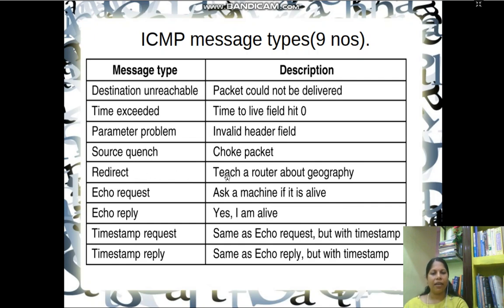The fifth message type is redirect. A redirect message means a router has received a packet which was traveling on a wrong route. A redirect message is sent to the source machine so that it can route the packet correctly. The sixth type is echo request and echo reply. This message is sent to check whether a machine is alive and reachable. Upon receiving an echo request, the machine can reply indicating that it is alive.